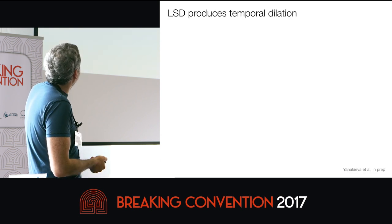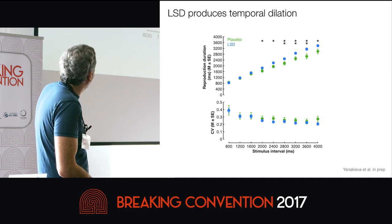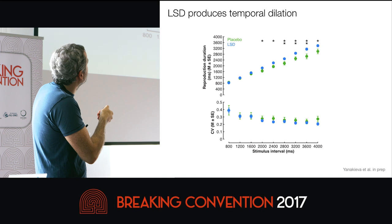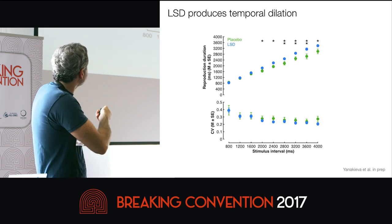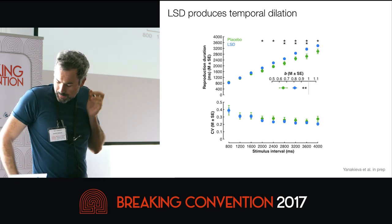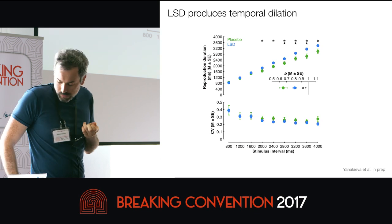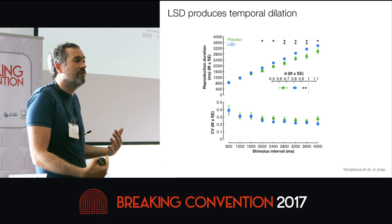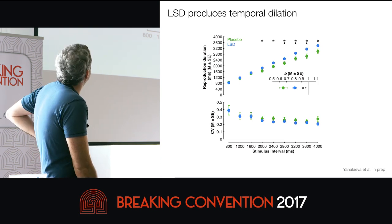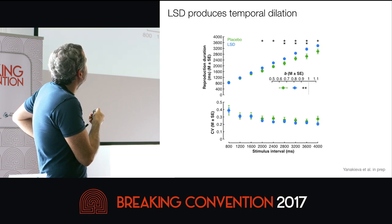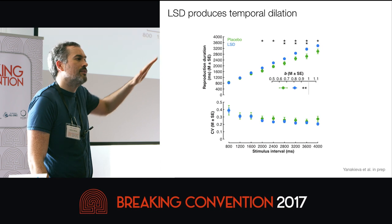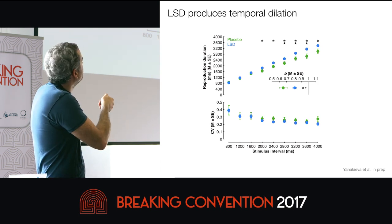Our central prediction that LSD would lead to temporal dilation was supported. We measured intervals ranging from 800 to 4,000 milliseconds. In the LSD condition, participants overproduced intervals in the range of 2,000 to 4,000 milliseconds, and the effects are fairly robust and consistent. We also included a coefficient of variability measure providing a measure of temporal precision, and we find no effects there — LSD is not impairing time perception or increasing variability, even though it is producing this temporal dilation effect. Within-participant regression analyses show that the LSD condition produces steeper slopes of reproduced intervals compared to placebo.